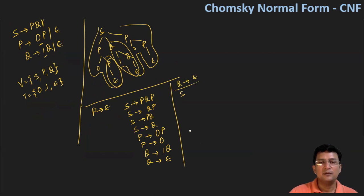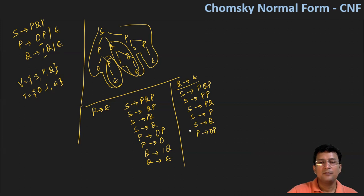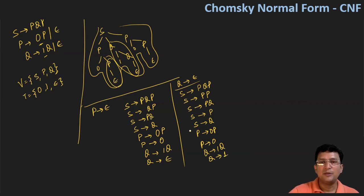Wherever Q appears, substitute epsilon. So S produces PQP becomes S produces PP; also write S produces PQP and S produces PP. Then S produces PQ — keep it, and substituting epsilon for Q gives S produces P. We already have S produces Q. Then P produces zero P, P produces zero also. Q produces one Q, and substituting epsilon for Q gives Q produces one. So now epsilon productions have been removed.